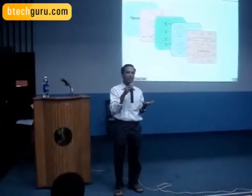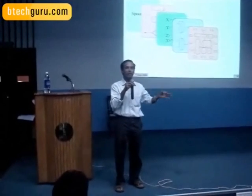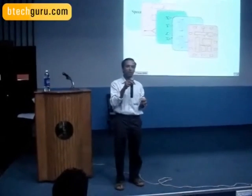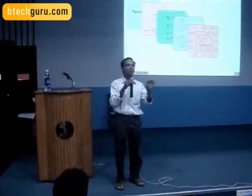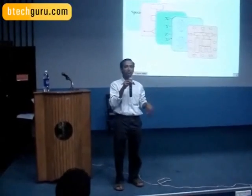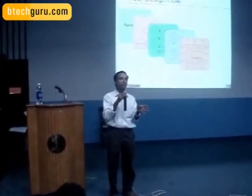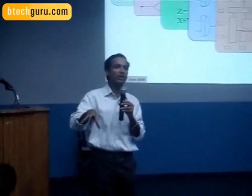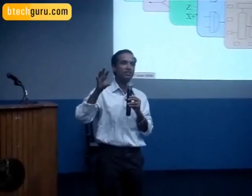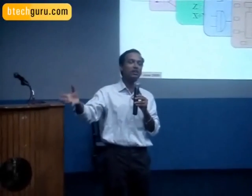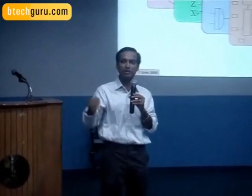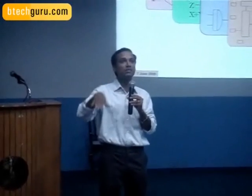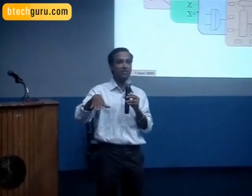If I give you a square and tell you to mark points on the periphery such that each point is away from another by a small delta, you can put only so many pins on the periphery. You can put a lot more pins on the square itself, on the area. That's exactly why computers moved away from using pins on the periphery to using pins on the surface.